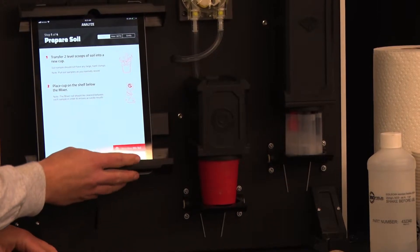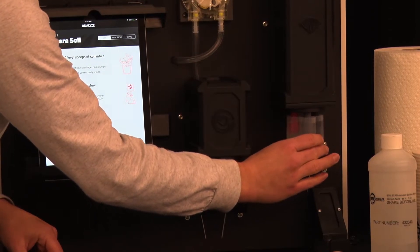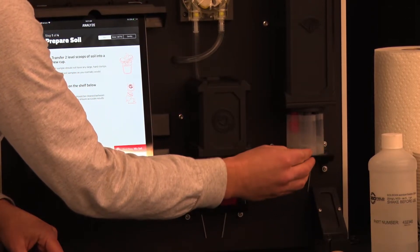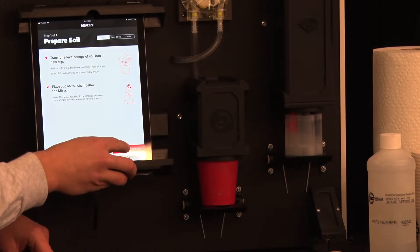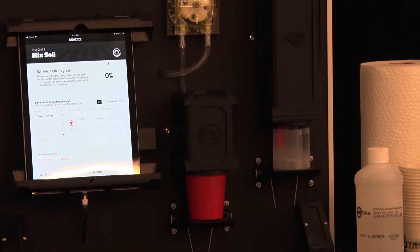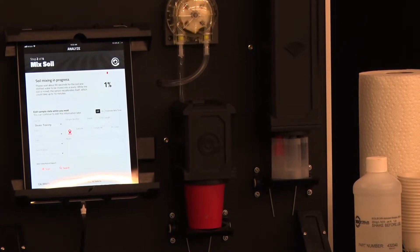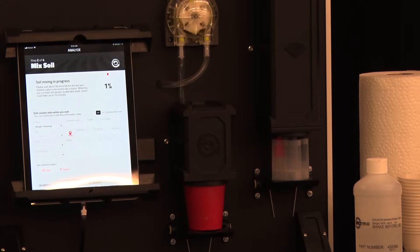Then you'll select next step mix soil. During this step you want to ensure that you leave your sensors in the nitrate solution in the calibration bottle. While the soil is being mixed the sensors will calibrate again. At this time you can go ahead and start entering your data.